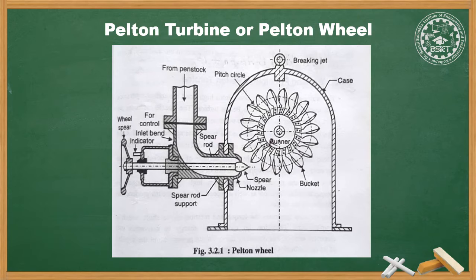The third part is the spear. The spear is a conical needle operated either by hand, wheel, or automatically. When the spear moves in the forward direction into the nozzle, the amount of water striking the runner is reduced. When pushed back, the amount of water striking the runner increases.